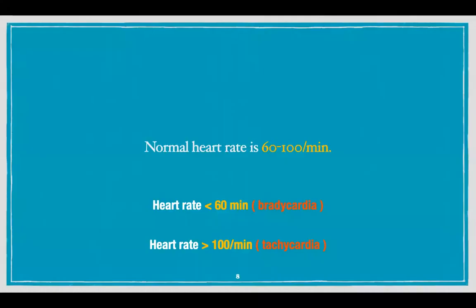Normal heart rate is 60 to 100 per minute. If the heart rate is less than 60 per minute it is called bradycardia, and if the heart rate is greater than 100 per minute it is called tachycardia.